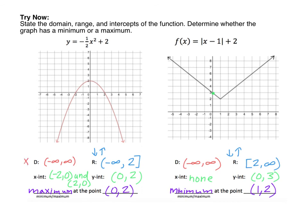Here are your solutions. Remember the domain is the set of x values, and since the parabola points down and to the left forever and down and to the right forever, it's going to have a domain of negative infinity to positive infinity. All U-shaped graphs and quadratic equations have a domain of negative infinity to positive infinity. For the range, I'm looking for the lowest and highest y values. Since it goes down forever, the lowest is negative infinity, and the highest point it goes up to is 2. It touches 2, so we have a bracket there. The x-intercepts are at (negative 2, 0) and (positive 2, 0). For the y-intercept, it crosses the y-axis at (0, 2). This has a maximum, and that maximum is located at the ordered pair (0, 2).